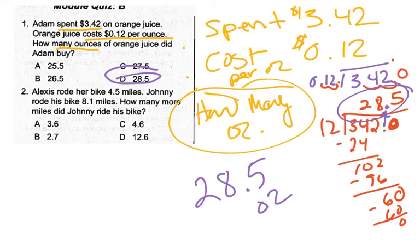Number 2: Alexis rode her bike 4.5 miles. Johnny rode his bike 8.1 miles. How many more miles did Johnny ride his bike? You're going to go ahead and do that one right now on your own as practice.